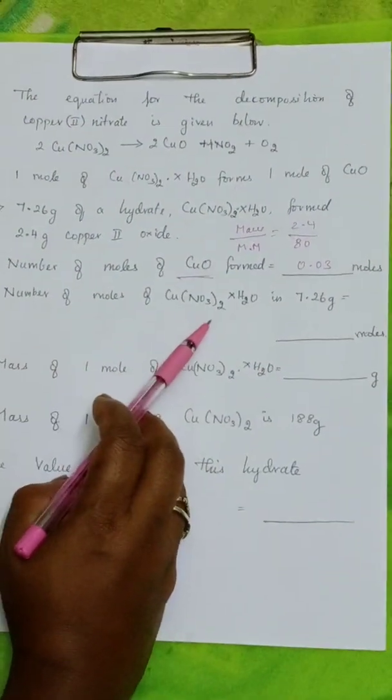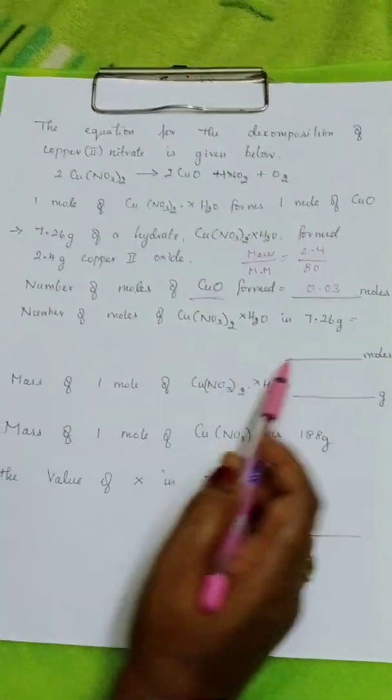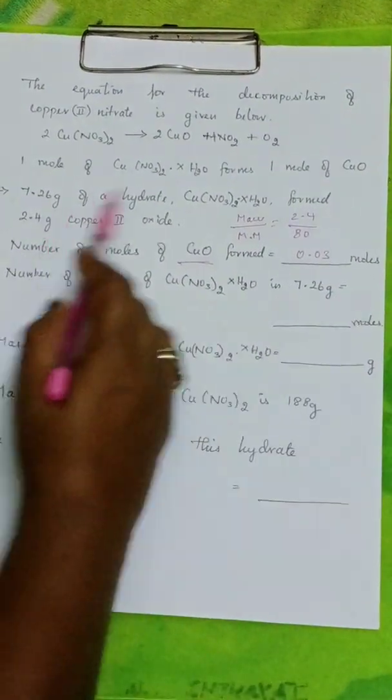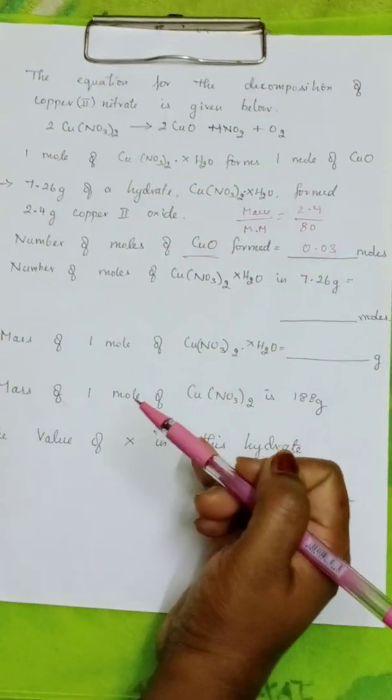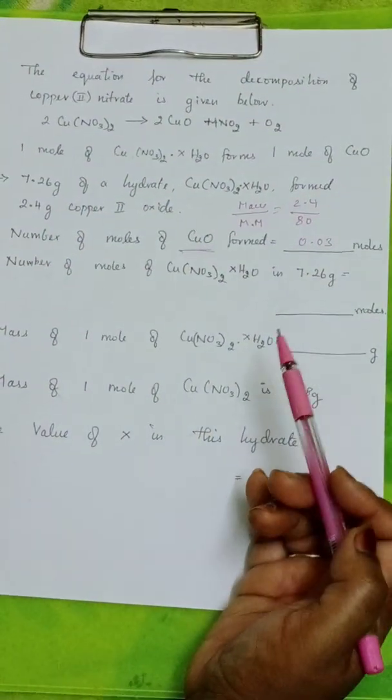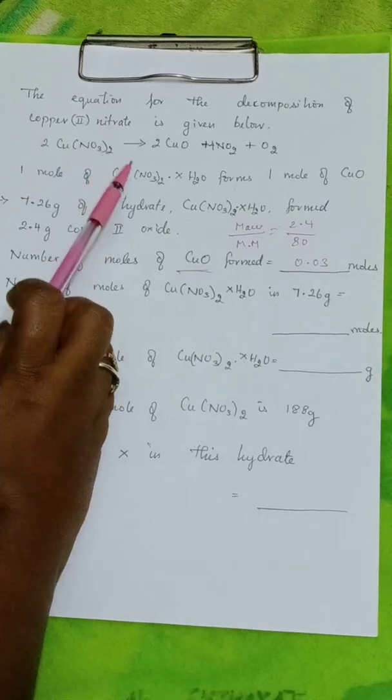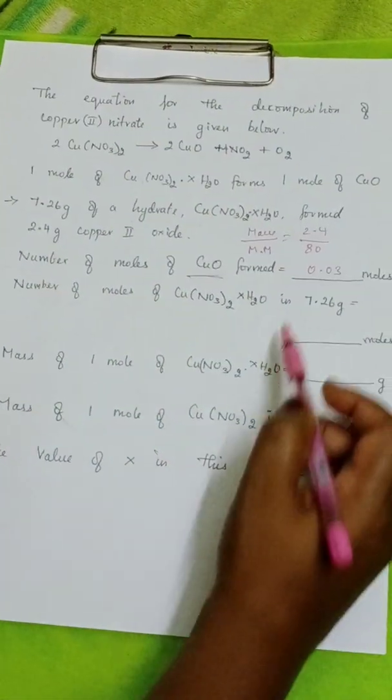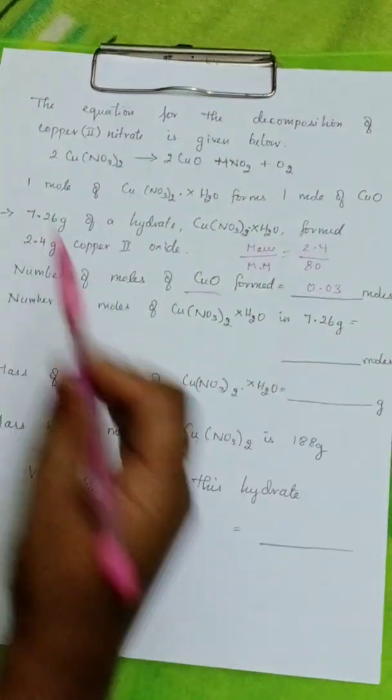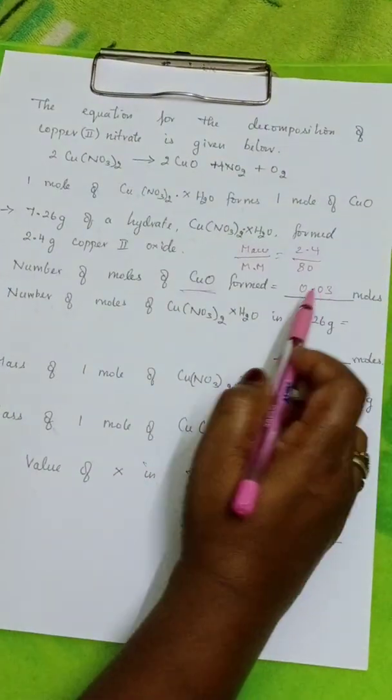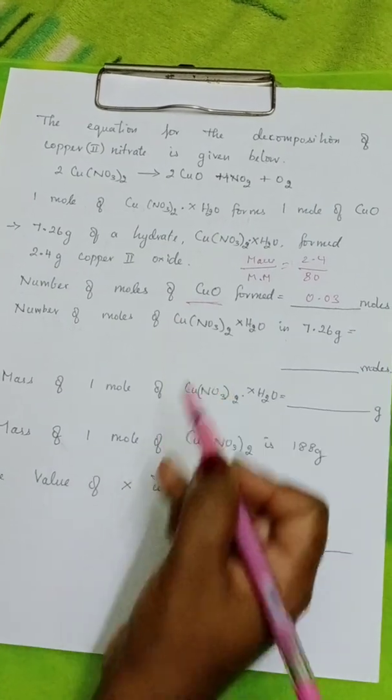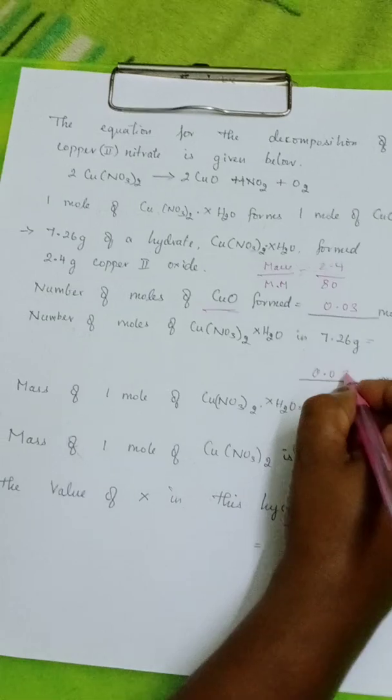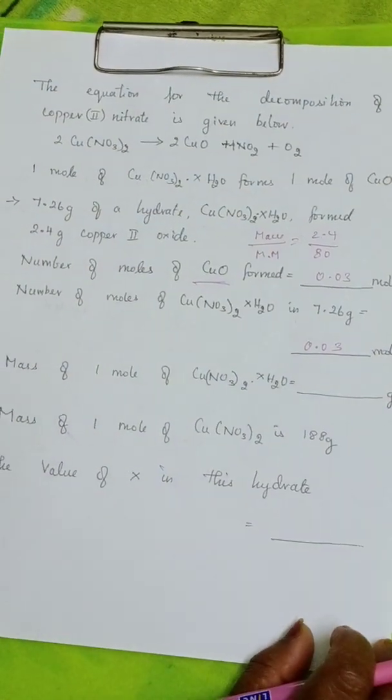So, number of moles of copper nitrate, hydrated copper nitrate in 7.26 grams. Over here we don't have any values data over here. If you see here, 1 mole of this forms 1 mole of copper oxide. So, when 1 mole of copper oxide is equal to copper nitrate, then 0.03 mole of copper oxide forms 0.03 moles of copper nitrate.